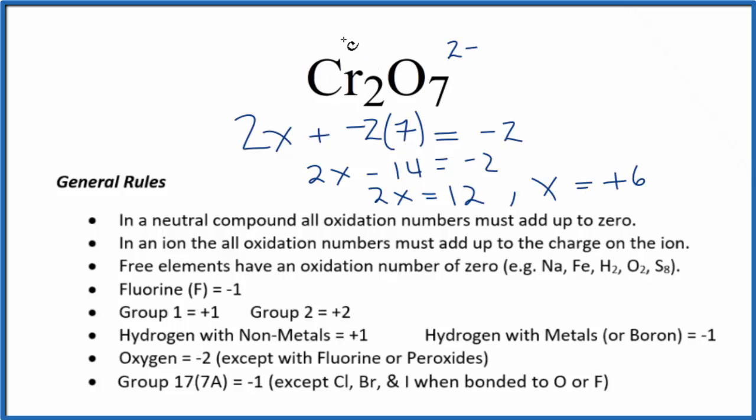X would equal a positive 6. So the oxidation number on each chromium here is plus 6. That's how we figure that out. And this makes sense because the whole thing has to add up to 2 minus.